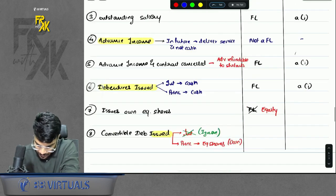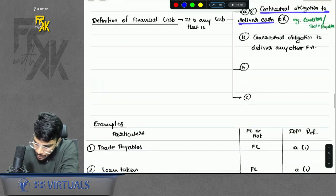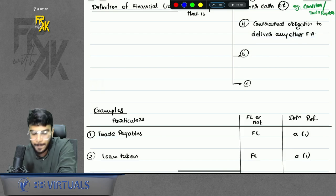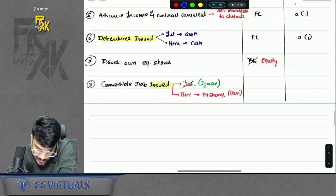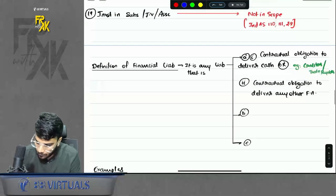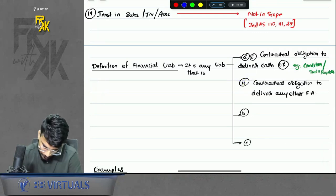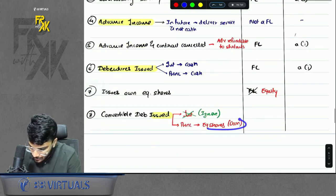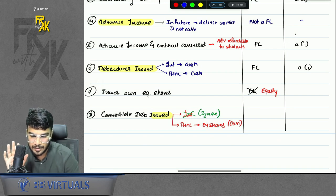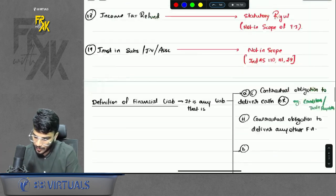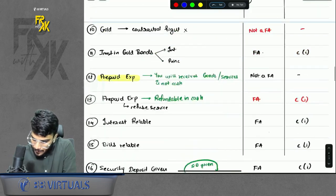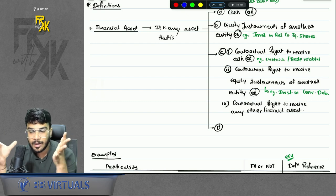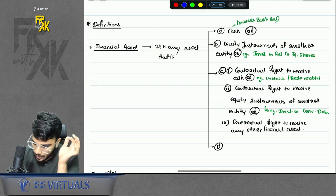Is there a contractual obligation to deliver cash? I already said ignore the interest part, just talk about the principal. Is there a contractual obligation to deliver cash? No, because in principle the company is not giving cash. Is there a contractual obligation to deliver any other financial asset? You will say yes, giving equity shares can fall here. The answer is no — it will not fall under A2 also. I will tell you why. When we say contractual obligation to deliver any other financial asset, first see whether issuing own equity shares is a financial asset or not.